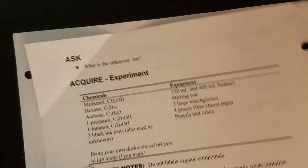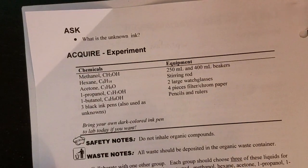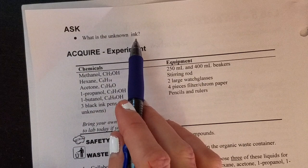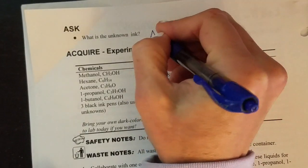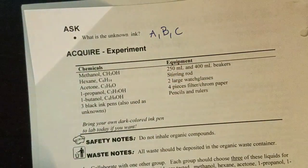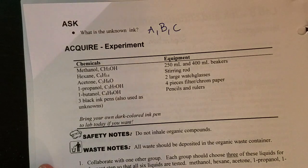On the next page, you can see that your task is going to be to figure out what the unknown ink is. And actually, because we're doing this remotely, you're going to do three inks. So you'll figure out what ink A and B and C are.